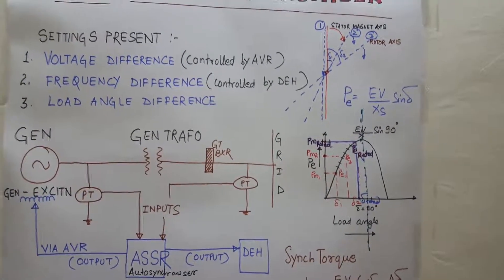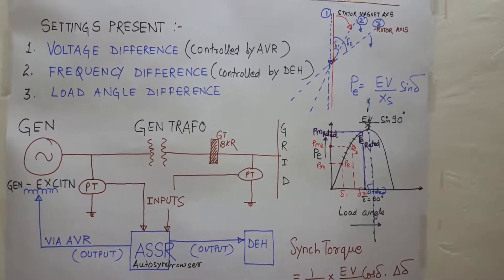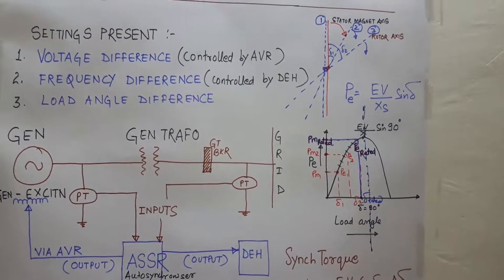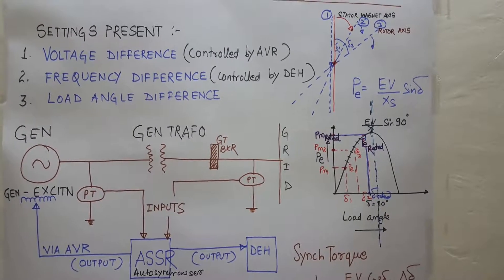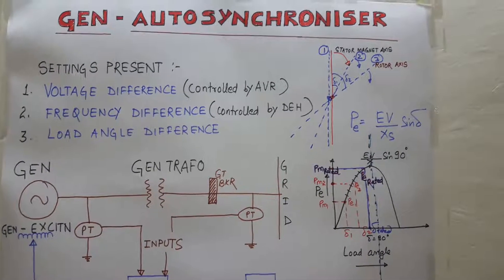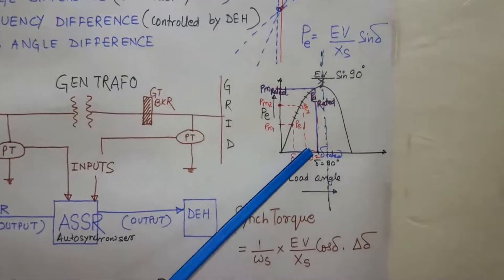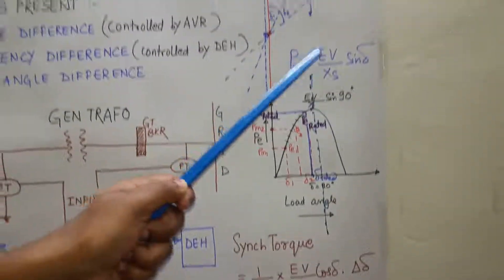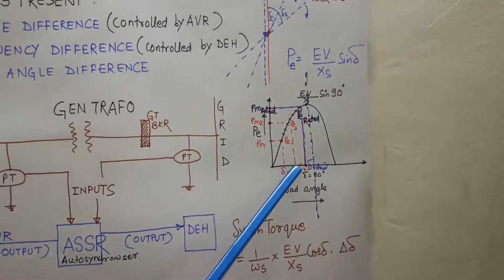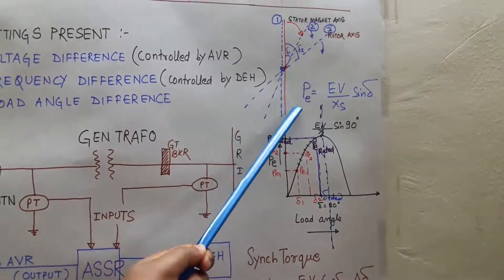After synchronization, the generator will start generating a certain megawatt. Now for generating the rated megawatt it will take some time. At that time the turbine bypass valve is closed and the steam work done is increased, and the delta, this load angle, is shifted towards right side. As we know that power is equal to EV by X sine delta, so by increasing the steam, the delta can be increased, and when the delta is increased, automatically the electrical power will increase.